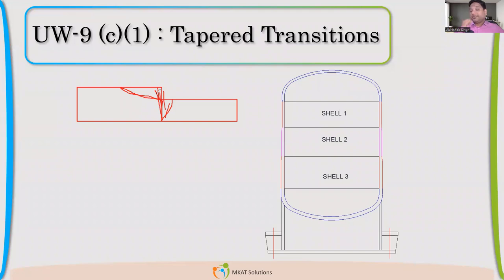This tapering will be required only when the difference in thickness is more than three mm. If it is less than three, then we are exempted. So, there are two requirements, either less than three or one-fourth of T, where T is the lower thickness among the two which we are welding.